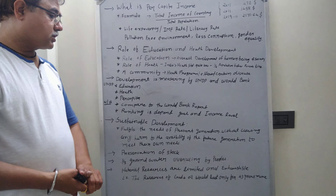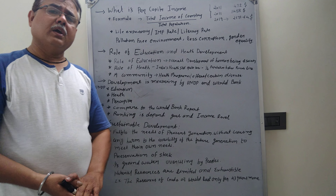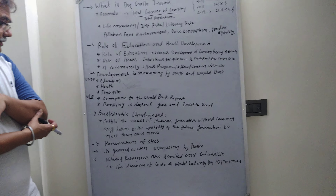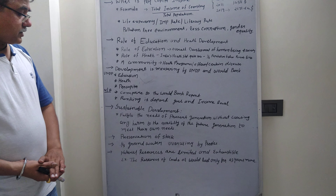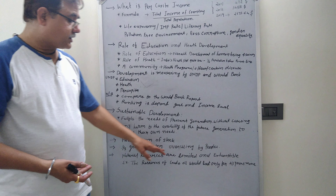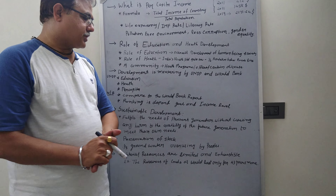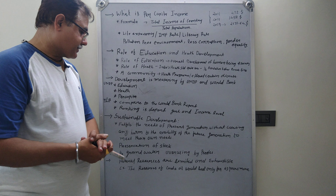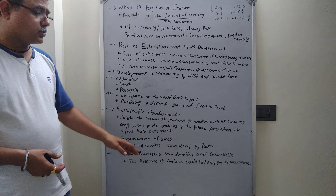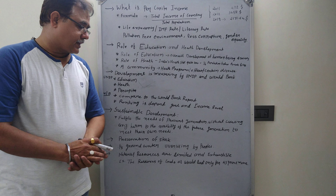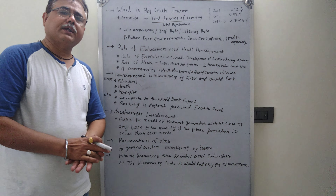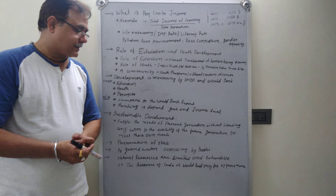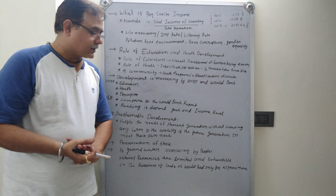One third of the groundwater we are using wastefully in daily life. We are using natural resources — unlimited resources, adjustable resources, limited resources, etc. Like the resources of crude oil: we know only 43 years remain when the resources are limited, nearing only 43 years before they are finished.